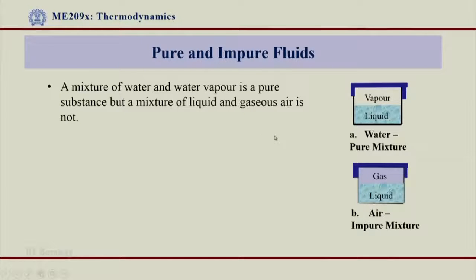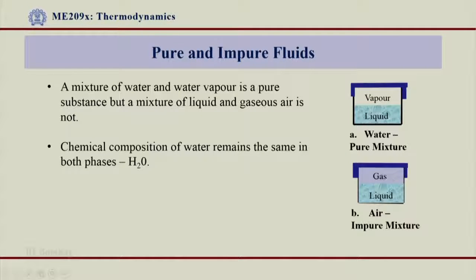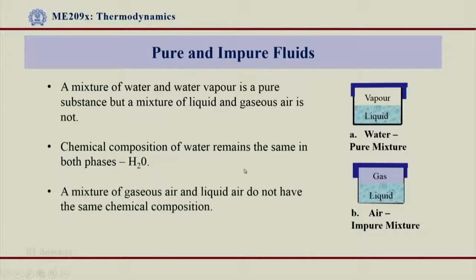The basic definition we established earlier comes to our help. The difference is the chemical composition. The chemical composition of water remains the same in both phases — whether liquid, vapour, or even solid, all three phases are H2O because the chemical composition always remains the same. But will it be the same for a two-phase mixture of air? The chemical composition of gaseous air will be different from that of liquid air, and that is why we call it an impure mixture.